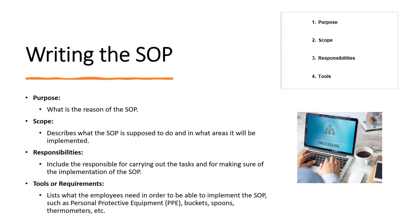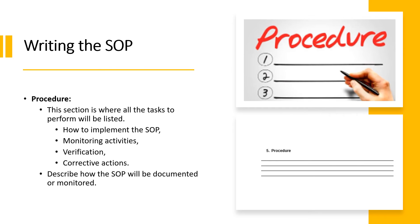Tools or requirements — here you list what employees need in order to implement the SOP, such as personal protective equipment, buckets, spoons, or thermometers, among others. Procedure — this section is where all the tasks to perform will be listed; the more details you provide, the better. Here is listed the step-by-step on how to implement the SOP, the monitoring activities and verification steps to ensure the SOP is implemented as intended, and the corrective actions if not implemented properly. The procedure also describes how the SOP will be documented or monitored.